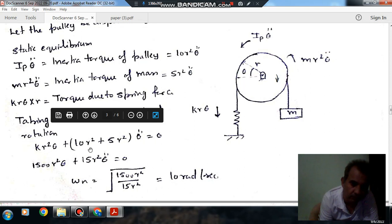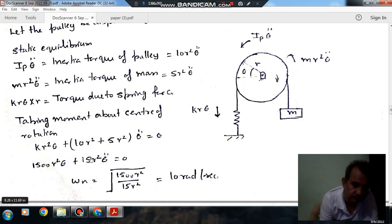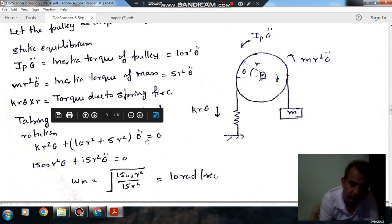So this will be IA theta double dot plus IP theta double dot, or it is 10R square plus 5R square. So this will be your equation of the vibration.